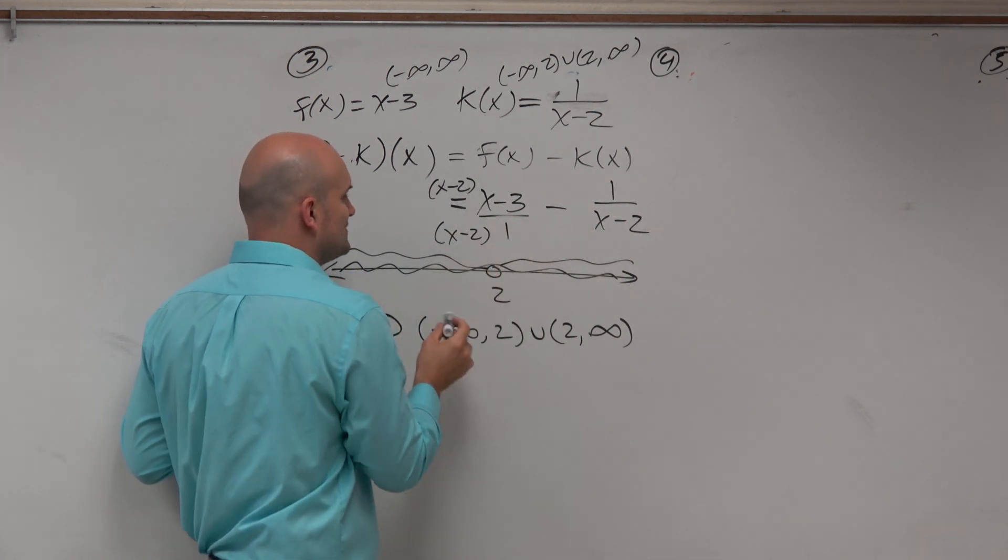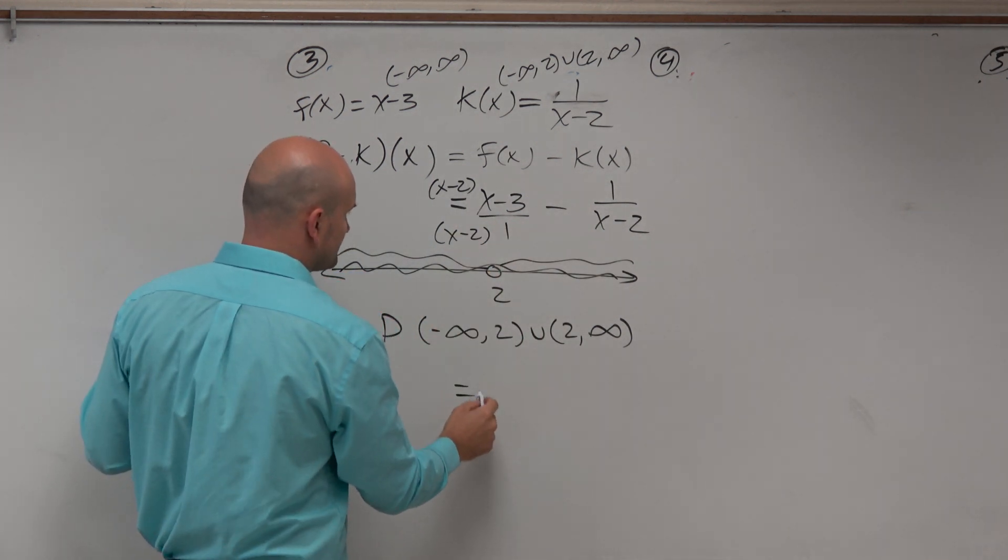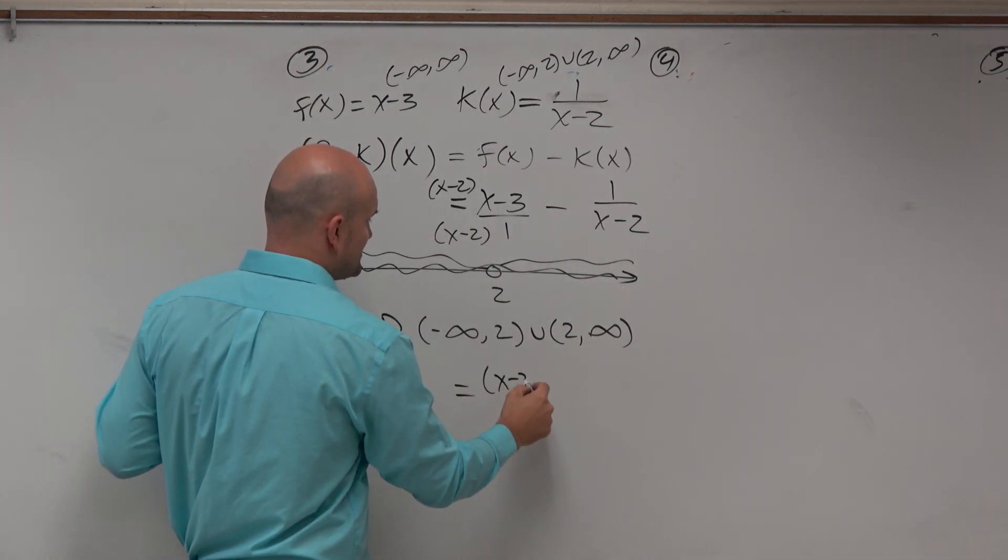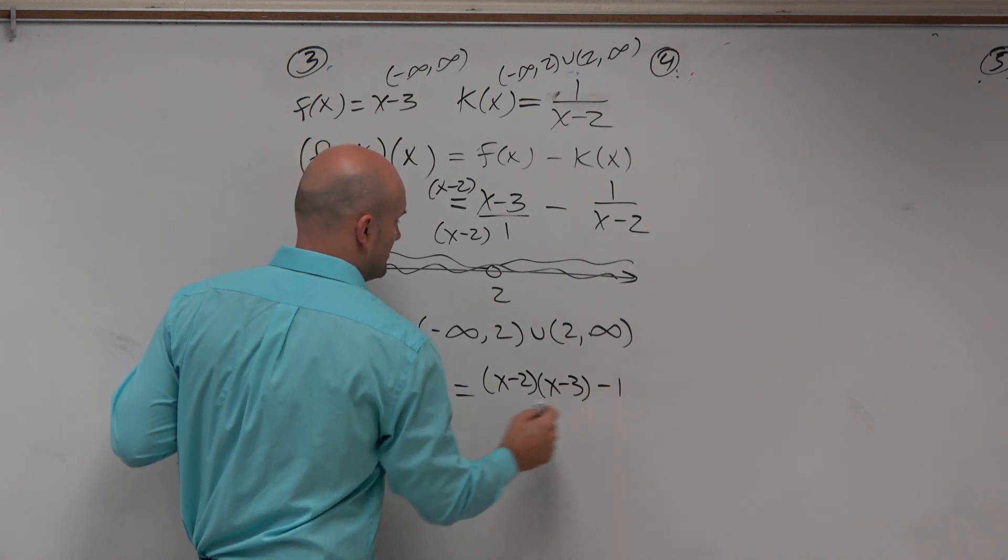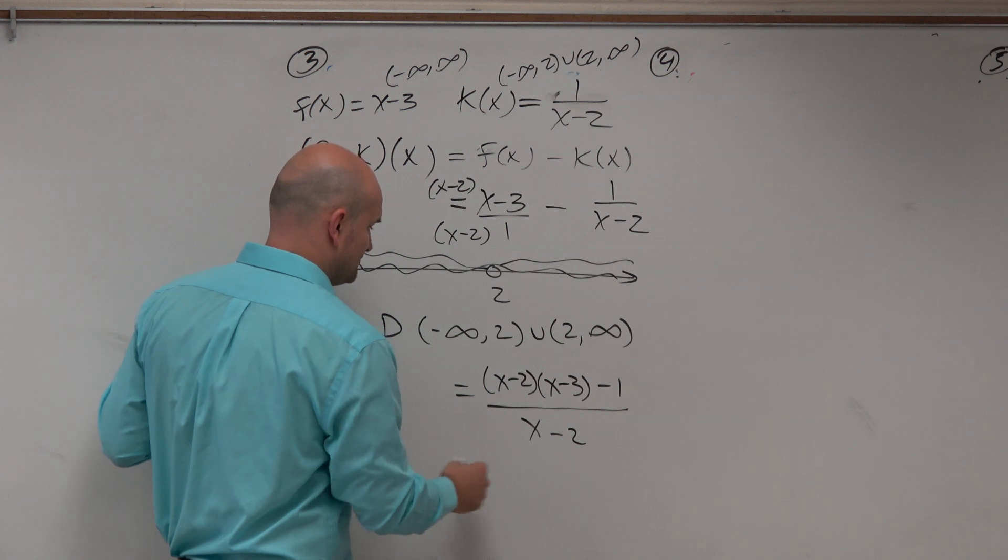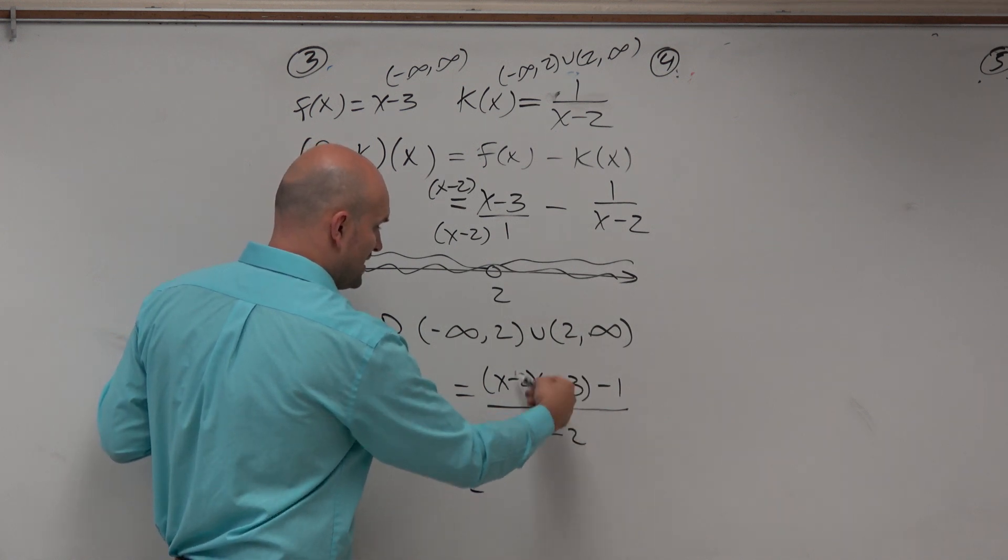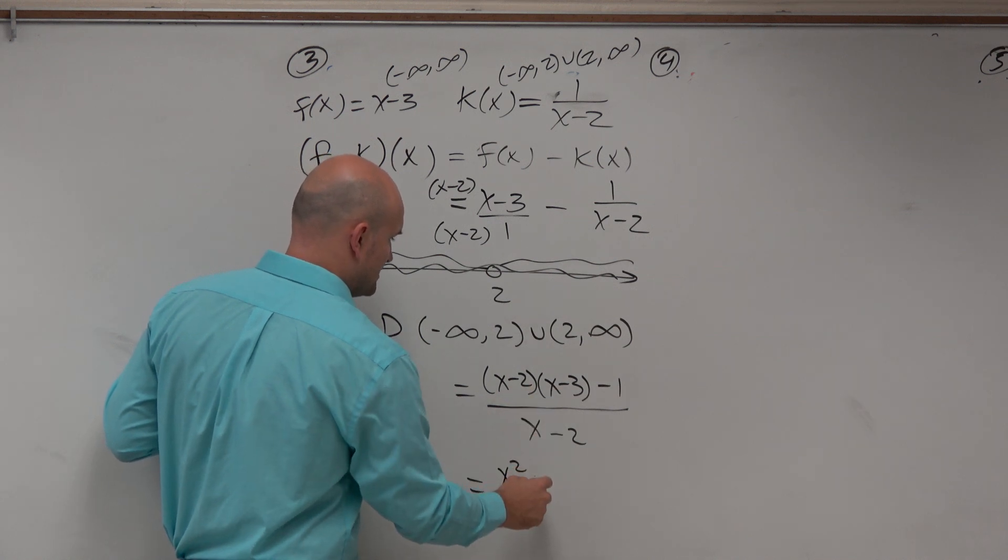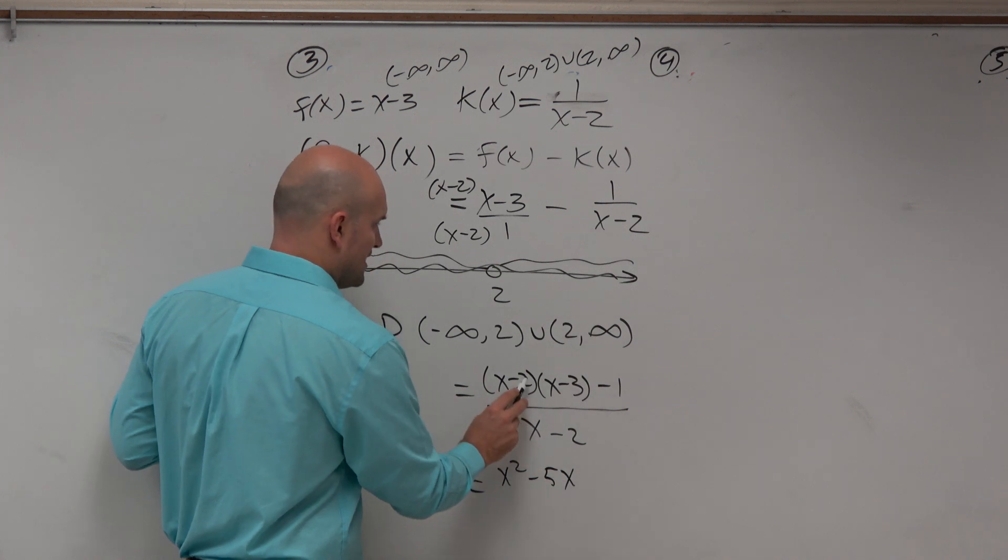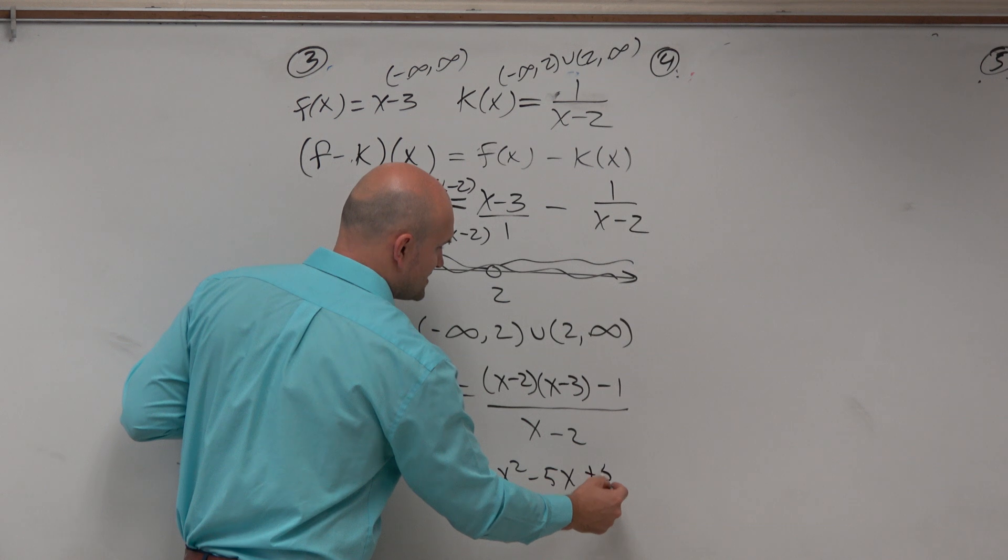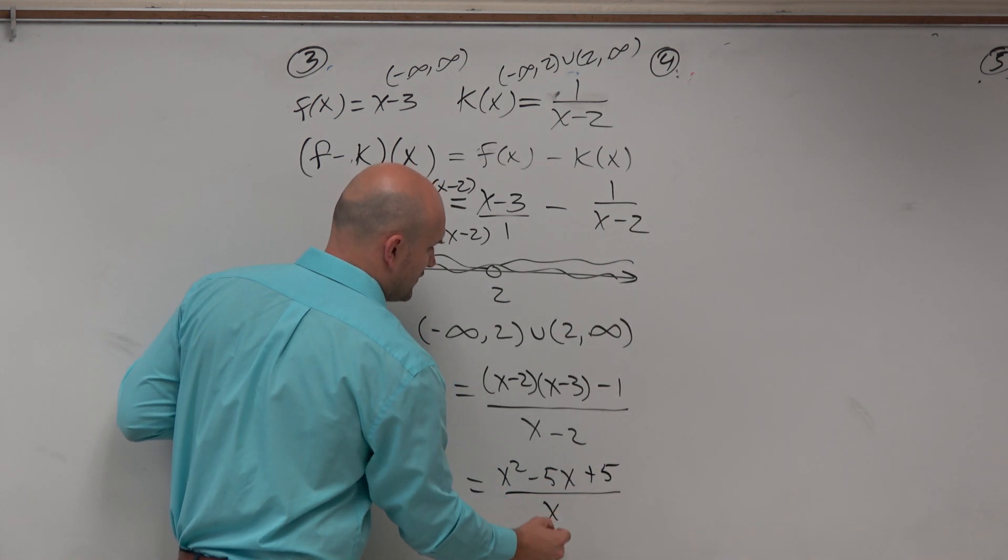Just remember, whatever you multiply the numerator, you have to multiply in the denominator. I'm going to show my work here. So therefore, I have x minus 2 times x minus 3 minus 1 all over my common denominator x minus 2. I can now multiply that and then subtract 1. So x times x is x squared. This is going to turn into a minus 5x, and negative 2 times negative 3 is a positive 6. But if I subtract 1, that's going to give me a positive 5, all over x minus 2.